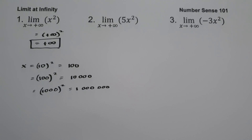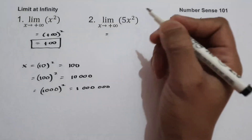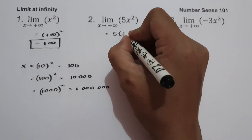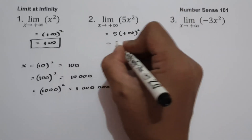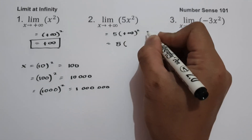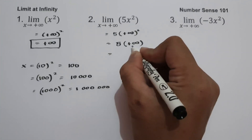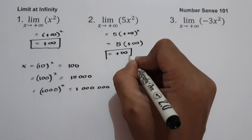On example number 2, what is the value of the limit of 5x squared as x approaches positive infinity? We substitute the value of x as positive infinity: 5 times positive infinity squared. Positive infinity squared is positive infinity, and 5 multiplied by positive infinity is still positive infinity.